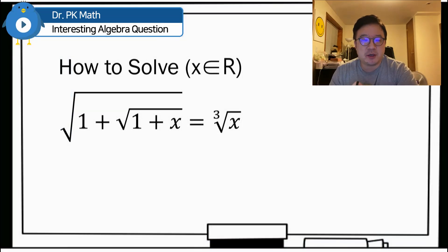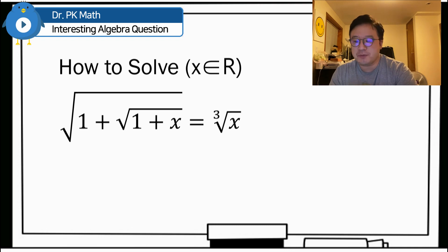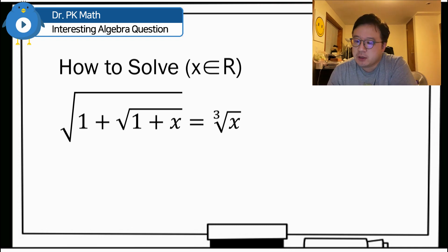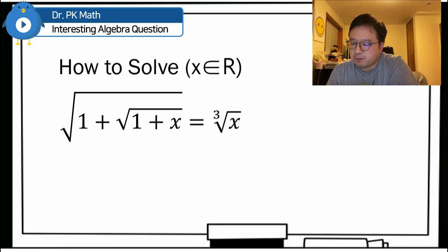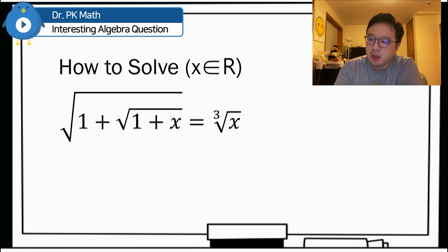Hello guys, welcome back, PK here. So I'm looking at this interesting algebra problem, the radical equation from Finland Math Olympiad. The question is how to solve x as a real number: square root of 1 plus square root of 1 plus x is equal to cube root of x.